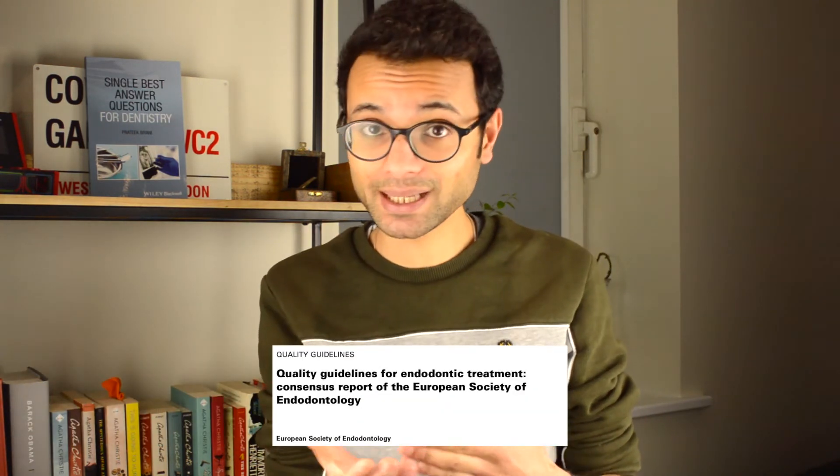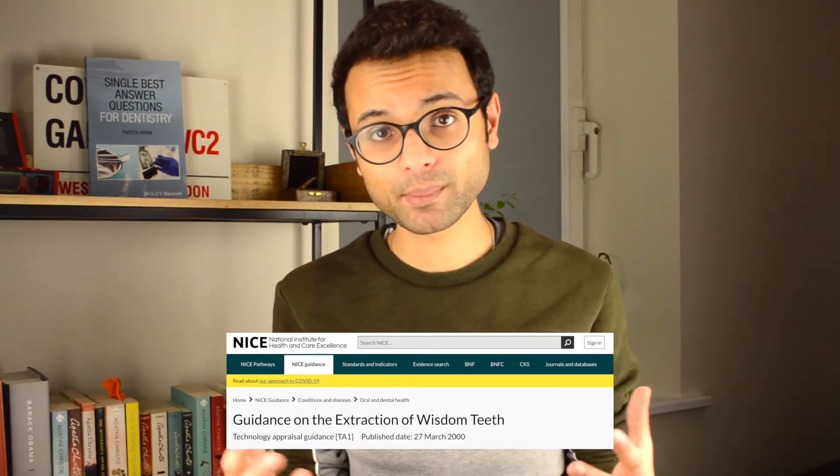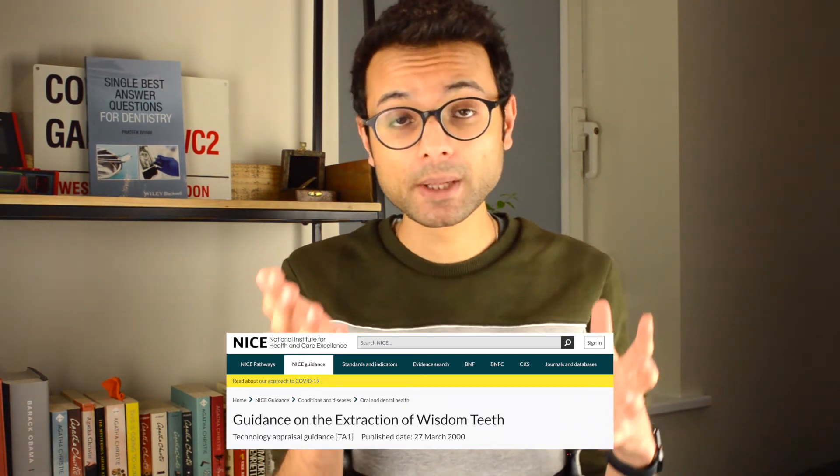Let's think about things we can audit. In day-to-day work, problems you notice can give you hints about what to audit. Quick examples include patient wait times for clinics and complication rates following procedures. Basic audits you can do in practice include radiograph quality audits, comparing against endodontic guidelines, or comparing against NICE guidelines — for example, auditing extractions of wisdom teeth to ensure they are in line with set guidelines.